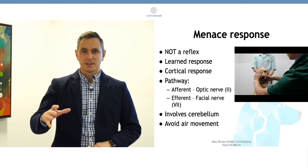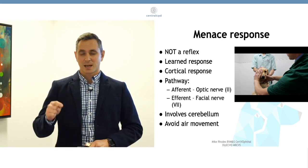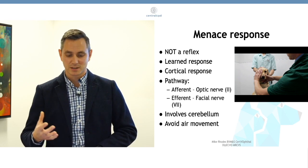The reason being, because the menace response goes via the cerebellum, it affects the menace response. So that's an example of an animal that doesn't have a menace response that can see.